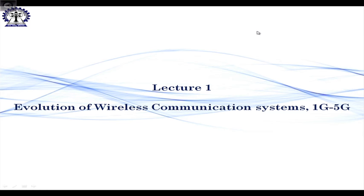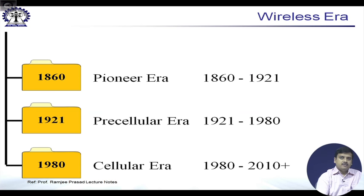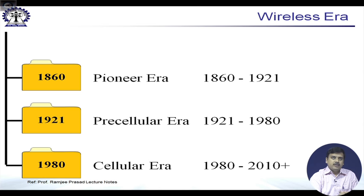Today we are going to talk about the evolution of wireless communication systems as it has gone from 1G to 5G. The whole era till today can be briefly divided into three parts: the pioneering era, the precellular era, and the cellular era.